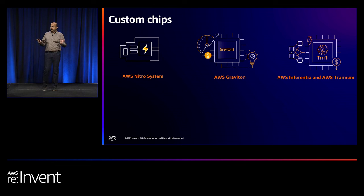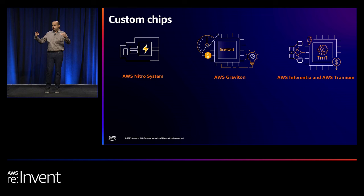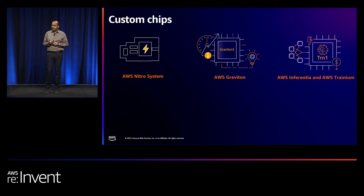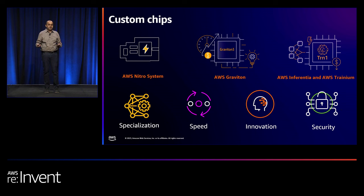AWS has been investing in building custom chips over the last several years. These include our Nitro cards — custom chips that power our Nitro system, where we offload storage and networking from the main server, maximizing resource efficiency and improving overall security. We've also built custom chips for AI and ML, like Inferentia and Trainium, and powerful efficient core compute infrastructure with Graviton-based servers. We invest in custom chips for specialization, optimizing for cost and power based on cloud use cases.